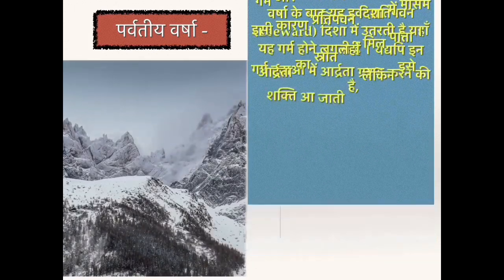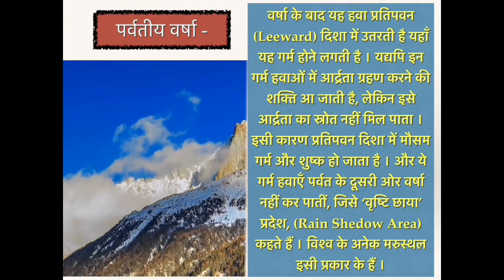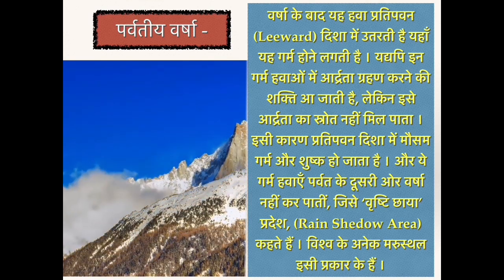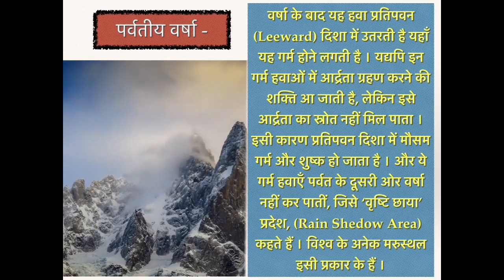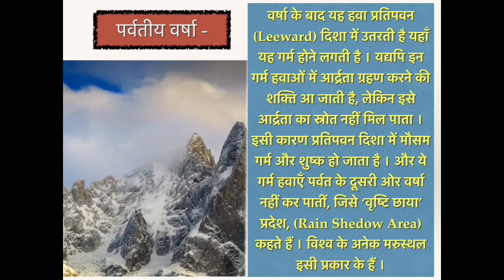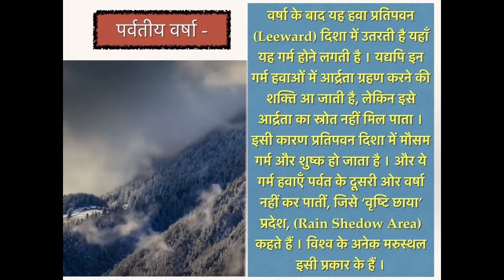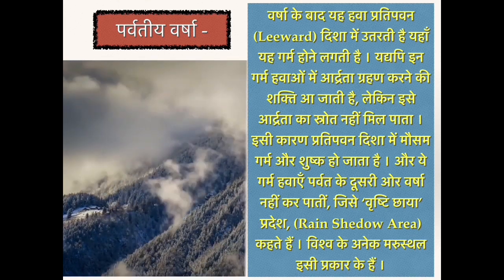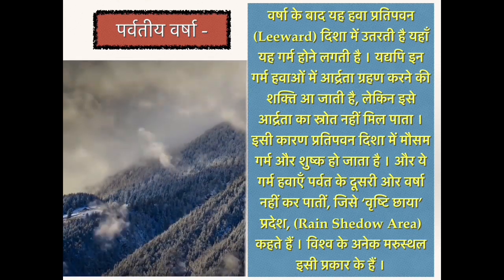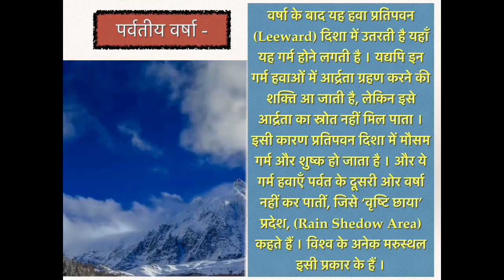वर्षा के बाद यह हवा प्रतिपवन (लीवर्ड) दिशा में उतरती है। यहां यह गर्म होने लगती है। इन गर्म हवाओं में आर्द्रता ग्रहण करने की शक्ति आ जाती है, लेकिन इसे आर्द्रता का स्रोत नहीं मिल पाता। इसी कारण प्रतिपवन दिशा में मौसम गर्म और शुष्क हो जाता है और यह गर्म हवाएं पर्वत के दूसरी ओर वर्षा नहीं कर पाती। जिसे वृष्टि छाया प्रदेश, रेन शैडो एरिया कहते हैं।